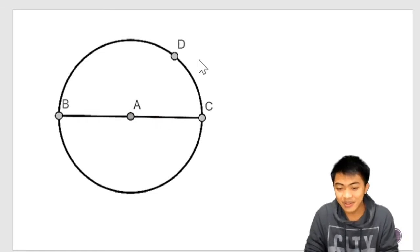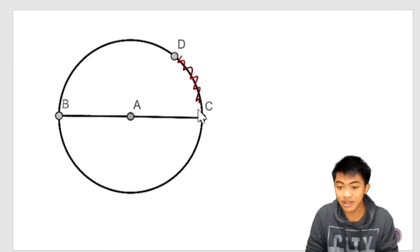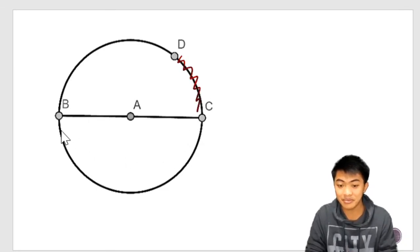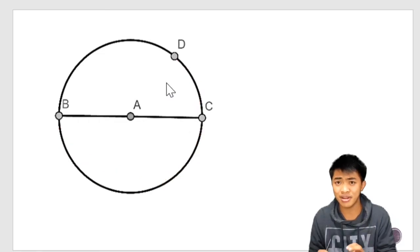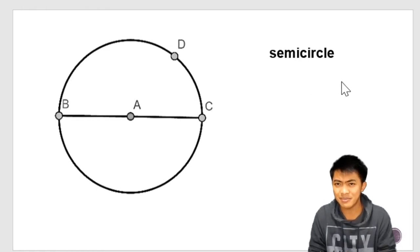Okay, so arcs are actually parts of the circle. So this one here is an arc. This one here is another arc. But there are proper terms to call these arcs. Okay, let's start with a semicircle. So semicircle is half of the circle. And the semicircle shares the same endpoints with the diameter.